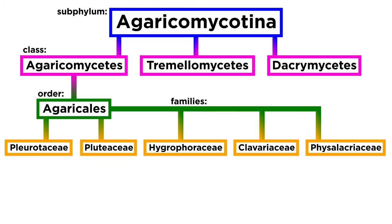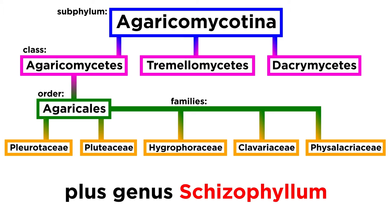For some time we have been looking at the order Agaricales. In this tutorial we will be discussing a number of additional families within Agaricales, including Pleurotaceae, Pluteaceae, Hygrophoraceae, Claveraceae, and Physilacraaceae, as well as a species within the genus Schizophilum.